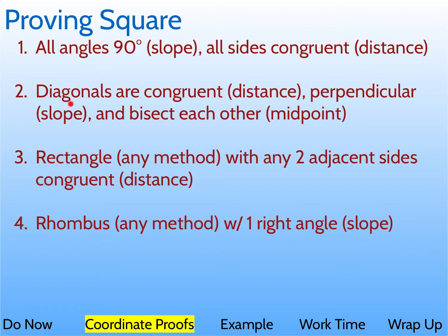You could also prove that the diagonals are congruent using the distance formula, perpendicular slope, and they bisect each other by finding the midpoint.